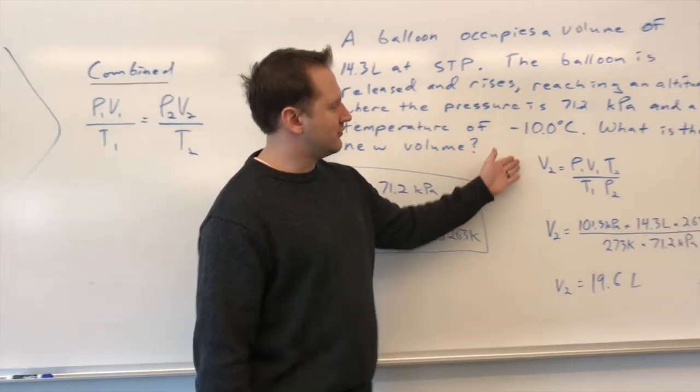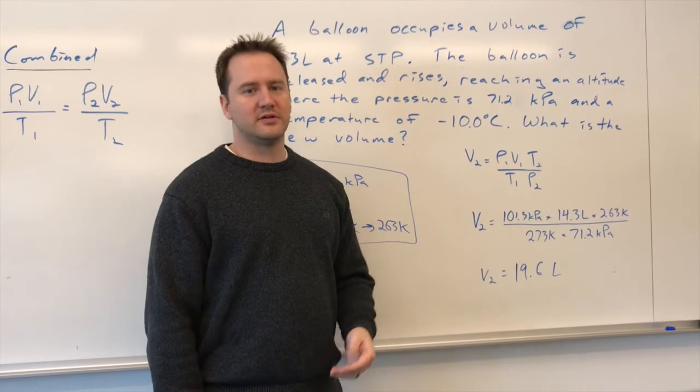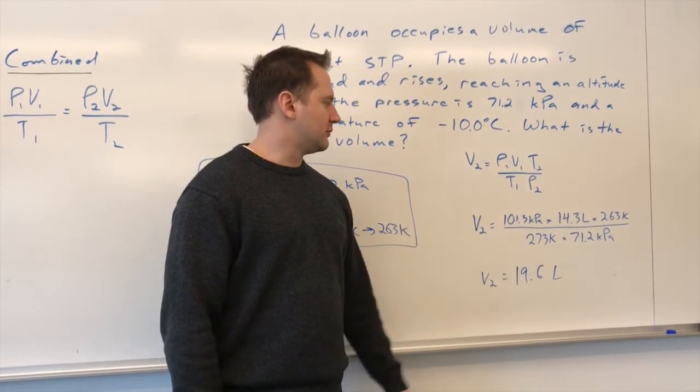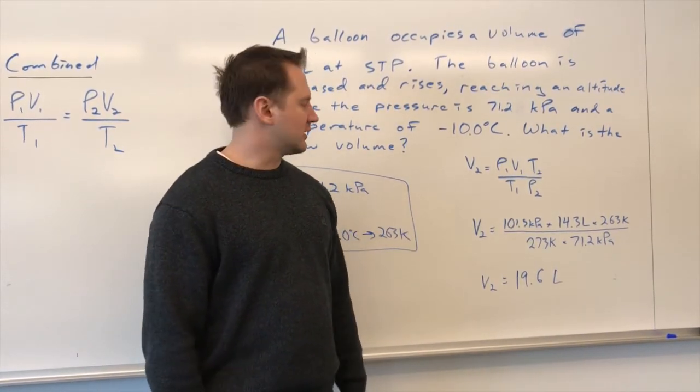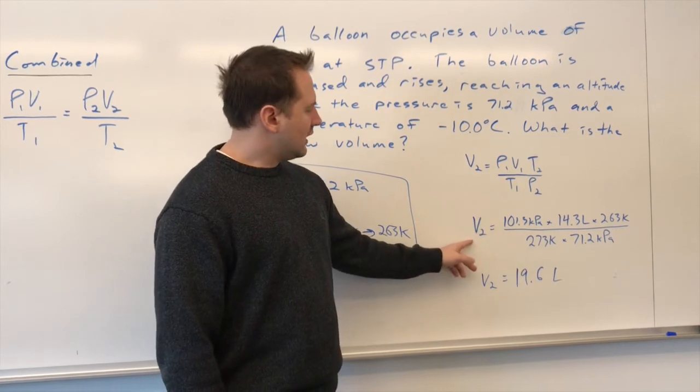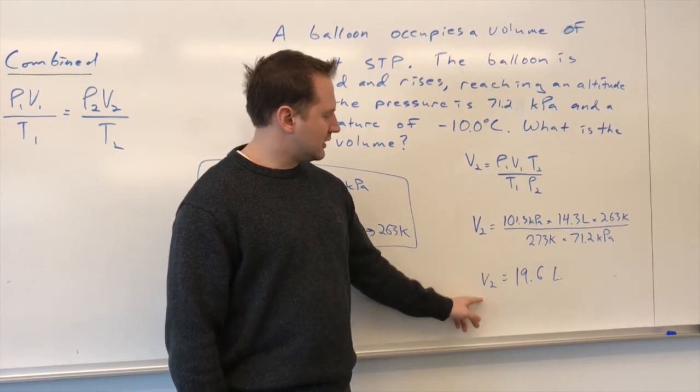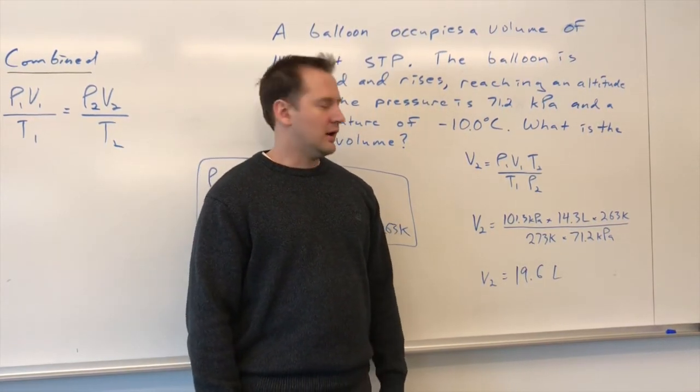Once we rearrange the equation, we get V2 is equal to P1 V1 T2 over T1 times P2, and all we have to do is plug in the values, and we see that the volume ends up being 19.6 liters.